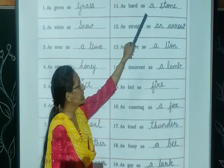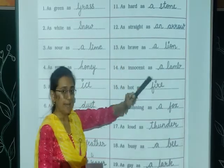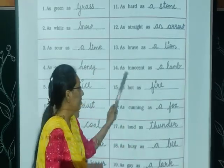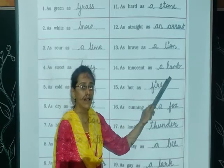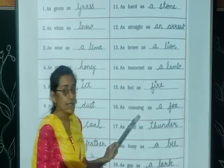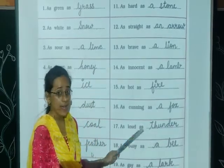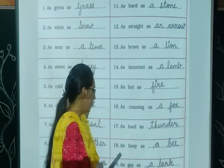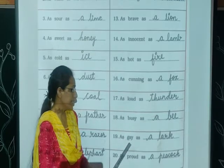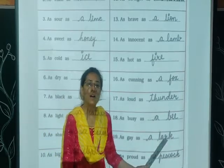As hard as a stone — stone is very hard. As straight as an arrow. As brave as a lion. As innocent as a lamb. As hot as fire. As cunning as a fox. As loud as thunder. As busy as a bee. As gay as a lark. As proud as a peacock.